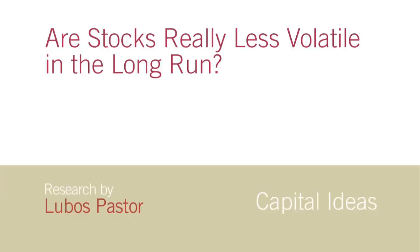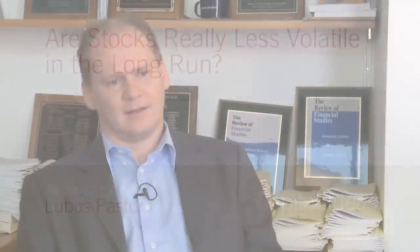There's this conventional wisdom that stocks become less volatile as the investment horizon increases. Suppose I'm investing in the stock market for one year and you are investing for 30 years. This conventional wisdom says that you, the long horizon investor, face less volatility than I do on a per-period basis. In other words, stocks appear less volatile to a long horizon investor than to a short horizon investor. And this wisdom has been used to justify heavy stock allocations for long horizon investors — if you have a long investment horizon, you should be heavily invested in stocks.